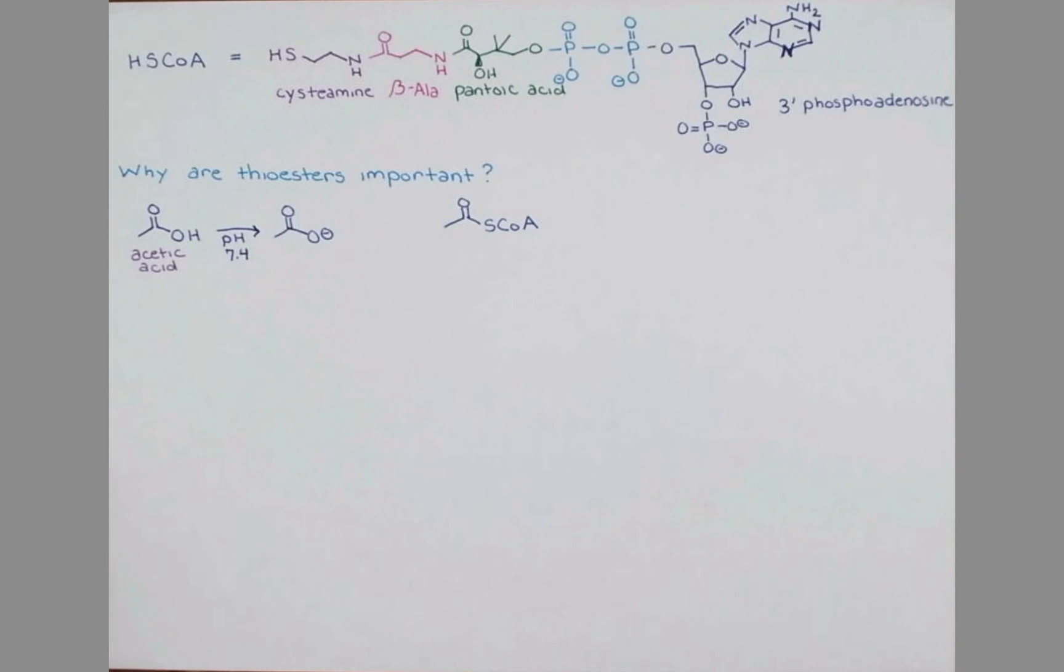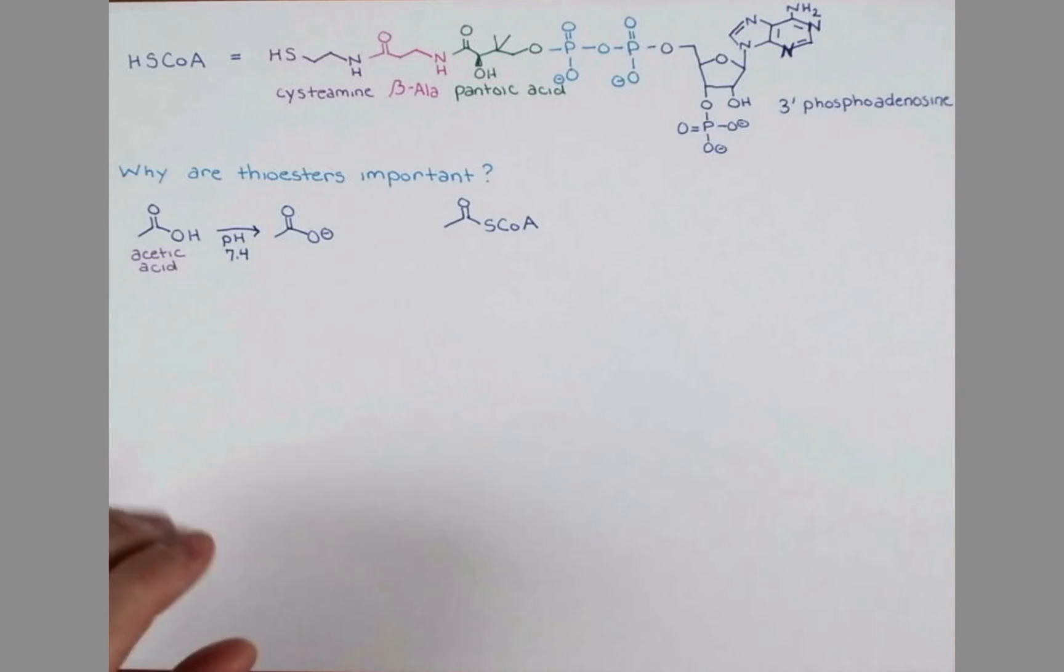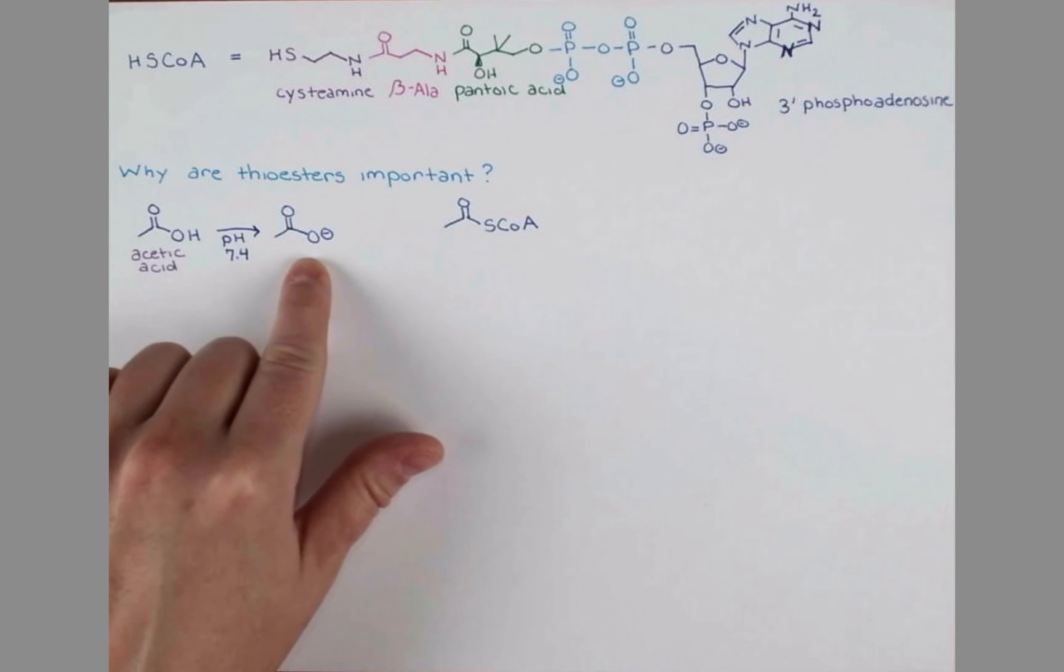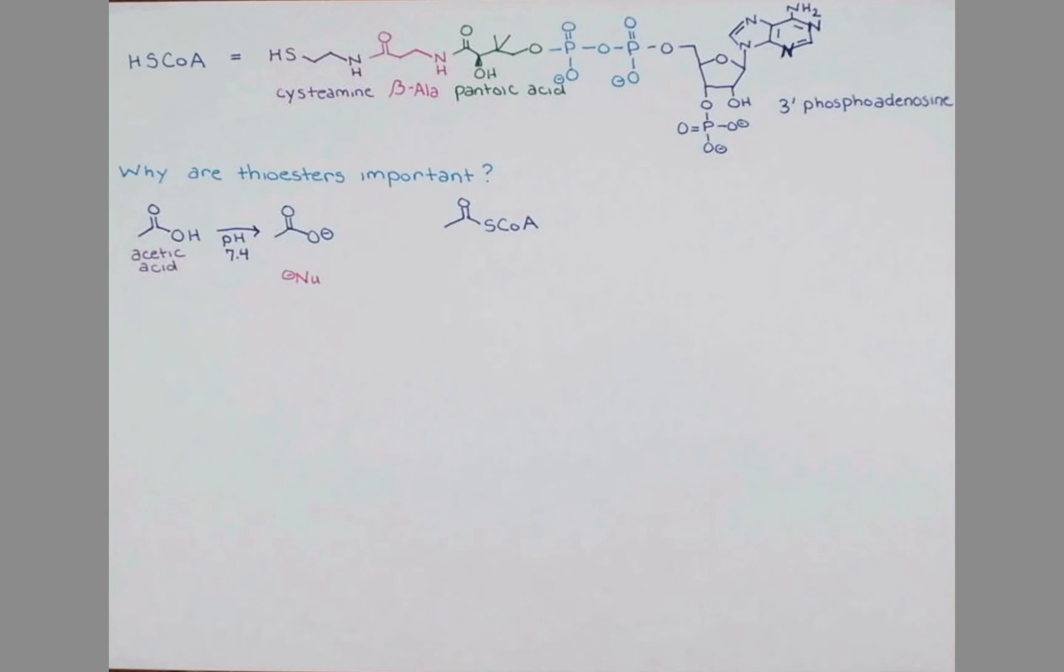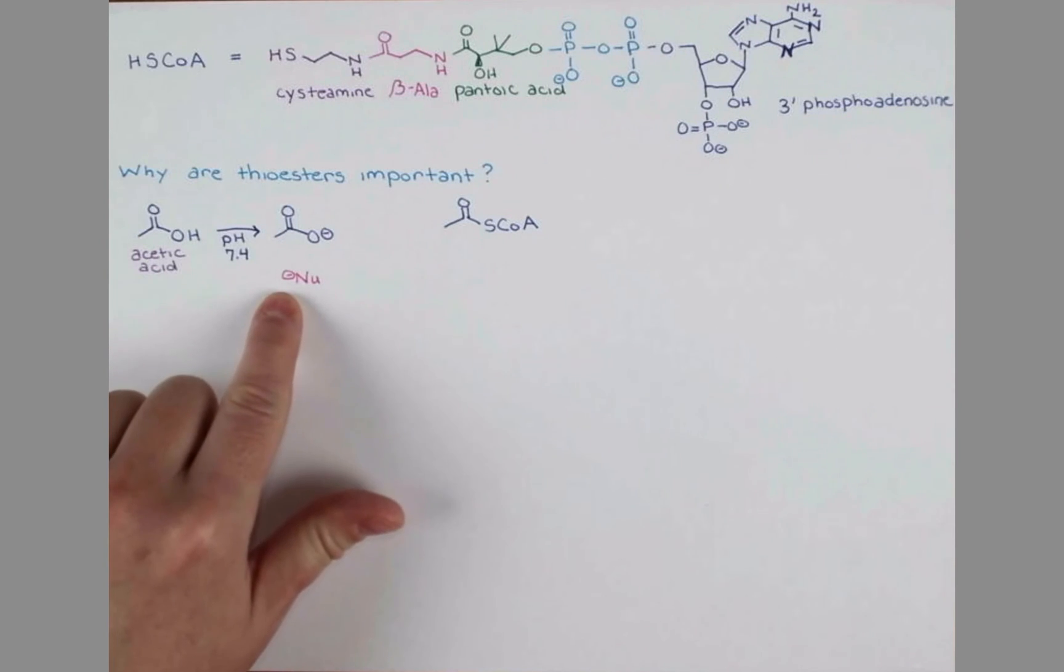Acetic acid has a pKa of 4.6. So at pH 7.4, where we're above the pKa, more basic than the pKa of this molecule, it loses a proton and becomes this anion. Now say for example, we wanted this carboxylate, the ionized carboxylic acid, to react with a nucleophile.